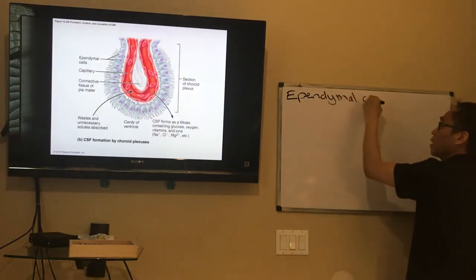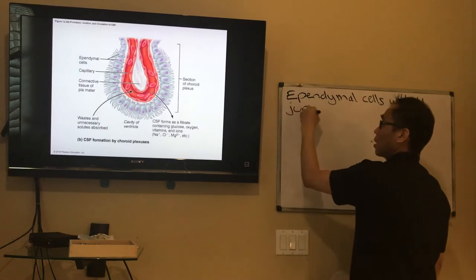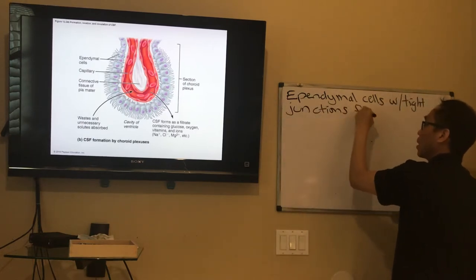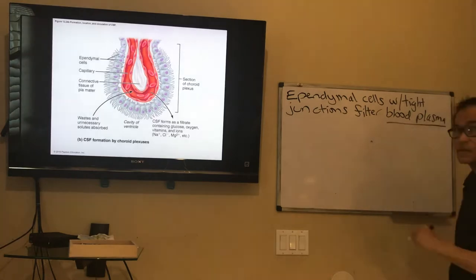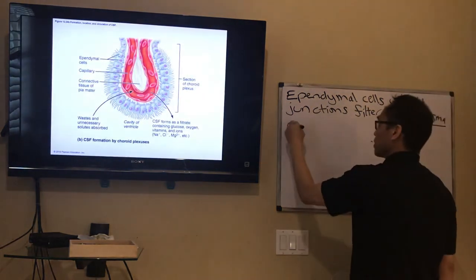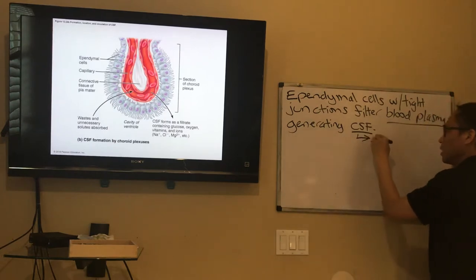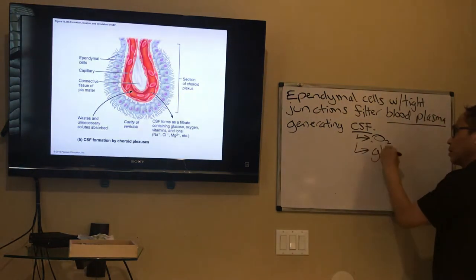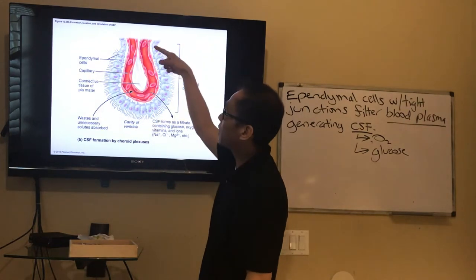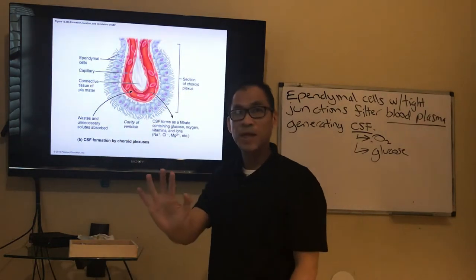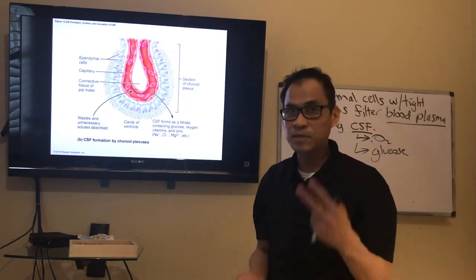The ependymal cells with tight junctions filter blood plasma — that's the liquid part of blood — generating the CSF, which has all the nutrients you need, like glucose for metabolism. Ependymal cells without tight junctions don't generate CSF. You only have the choroid plexus in those two locations. Everywhere else, you still need to protect neural tissue from whole blood.